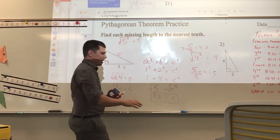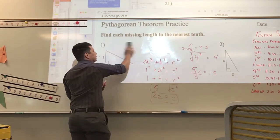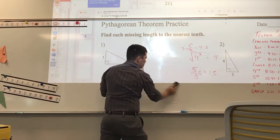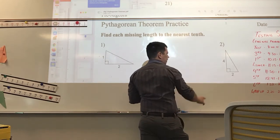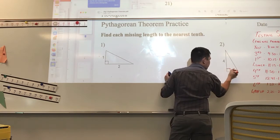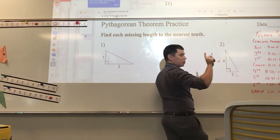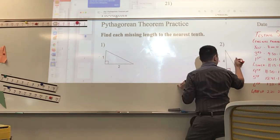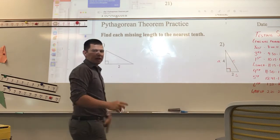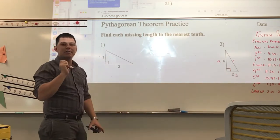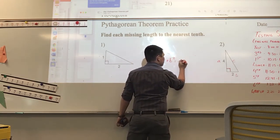It looks like a lot of work, but it's really not that bad. Just make sure you label your triangle correctly. The hypotenuse is C. The legs make up the right angle, so those sides are A and B. That third side — which is also always the longest side — is always C. A and B can flip-flop; it doesn't matter. But C has to be your hypotenuse. A squared plus B squared equals C squared.